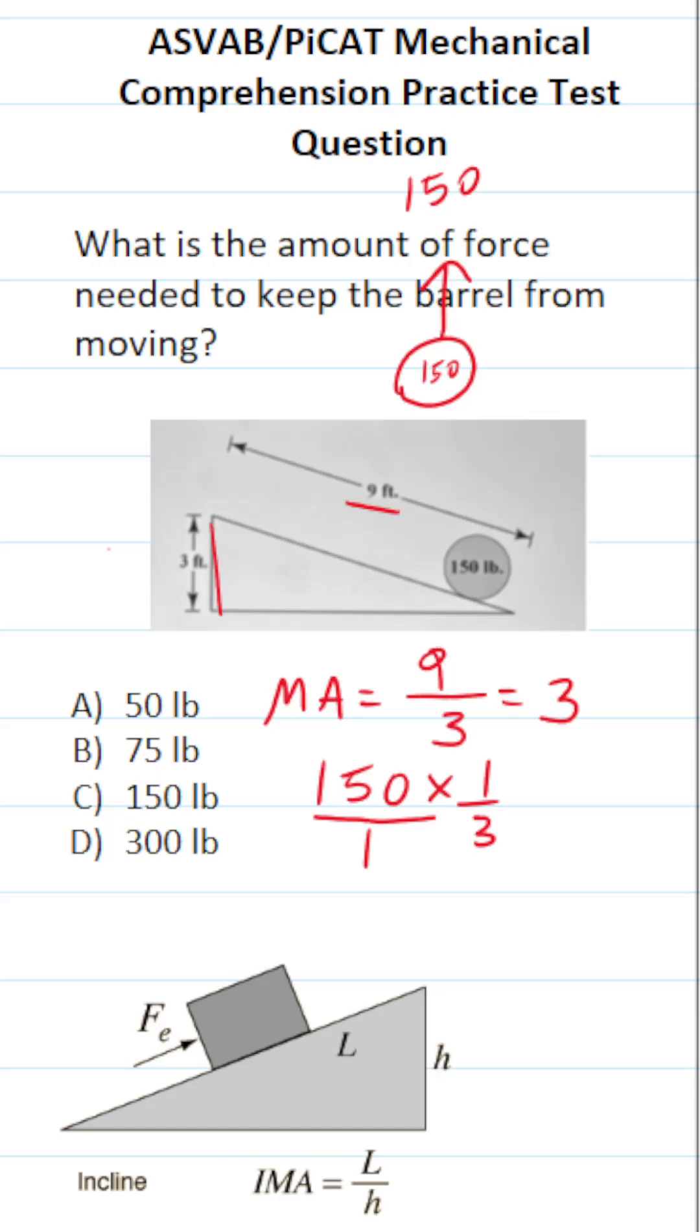You can cross reduce: 3 goes into 3 one time, and 3 goes into 15 five times. Therefore, 3 goes into 150 fifty times. This gives us 50 over 1 times 1 over 1, which is 50 times 1, equaling 50.